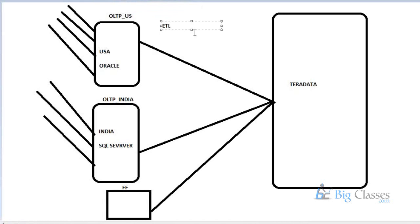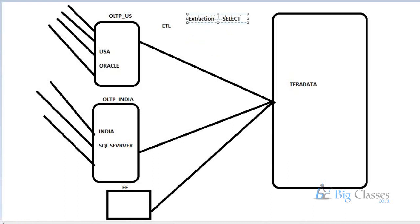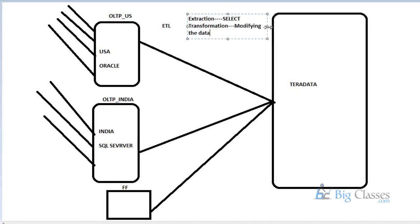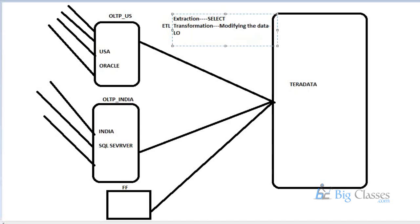ETL stands for Extract, Transform, and Load. Extraction is reading data from a database using a SELECT statement in SQL. Transformation is modifying or changing the data from one form to another. Load stands for loading — adding data to the database using an INSERT statement in SQL. You read data from OLTP, transform it, and load it into the data warehouse for analysis.